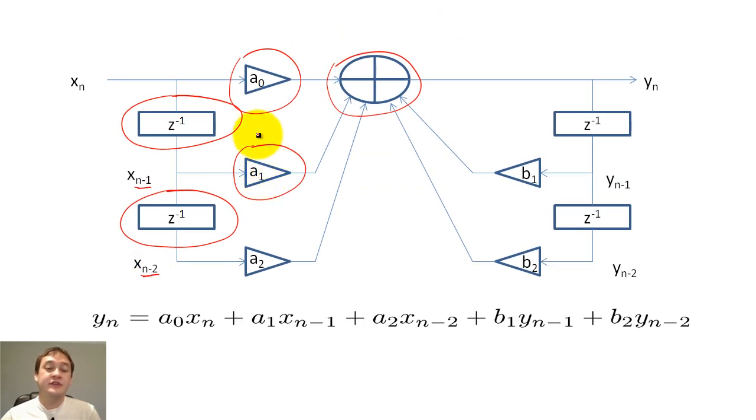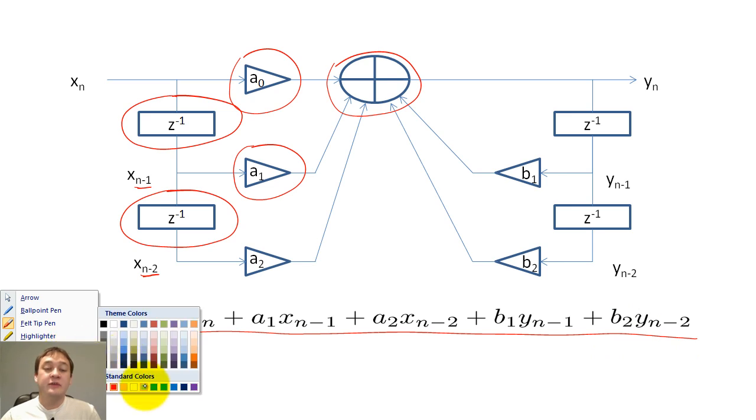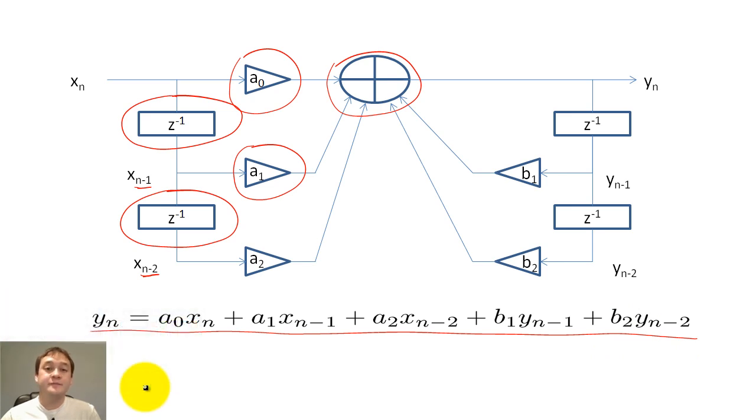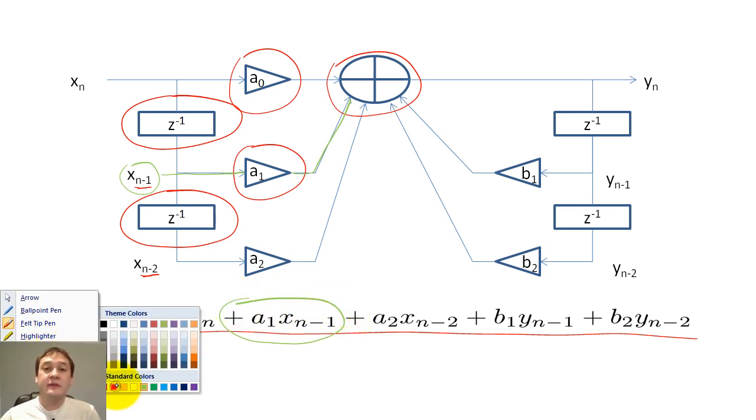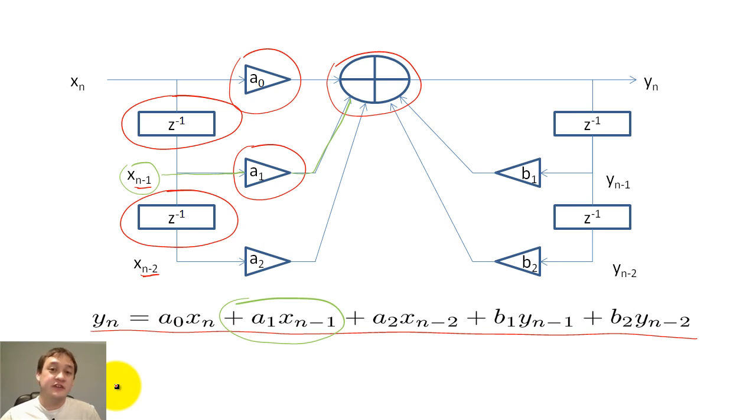This filter is expressed by a difference equation that is created by mapping the add and multiply operations to a mathematical expression. For example, we multiply X_n-1 by a_1 and add it to our final Y_n. We will discuss difference equations in greater depth later, so this is just an introduction.